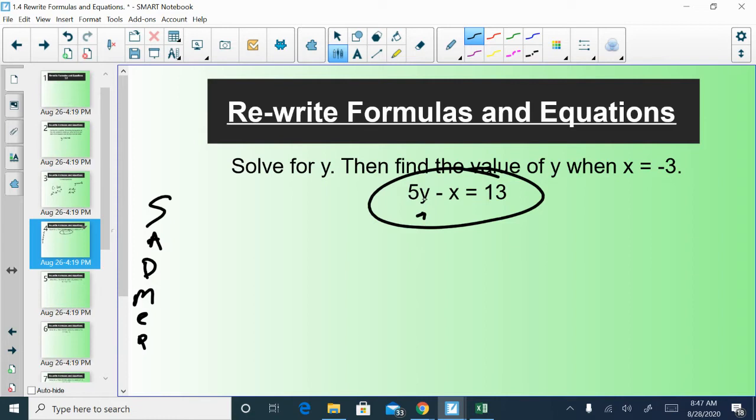So I want to get y by itself. Y has a couple things going on with it. Y has a subtract x with it. And also, y is also being multiplied by 5. You see that y is being multiplied by this 5. And there's this subtract x happening to it. And so when I look to undo these things, I'm undoing them in the SADMAP order. I'm going to start with undoing subtraction or addition. And like I said, there is a subtract x here. I should be able to undo that subtract x. And we all should know that the way to undo a subtract x is to add x.